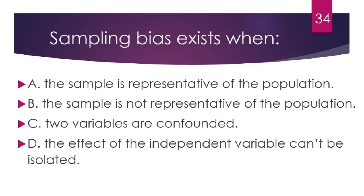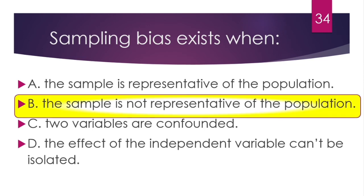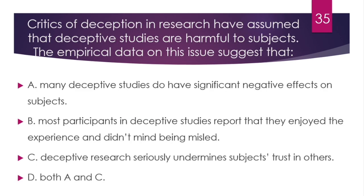Question number 34. Sampling bias exists when — the answer is B — the sample is not representative of the population. If you select a sample that does not accurately represent the broader population, that is called sampling bias.